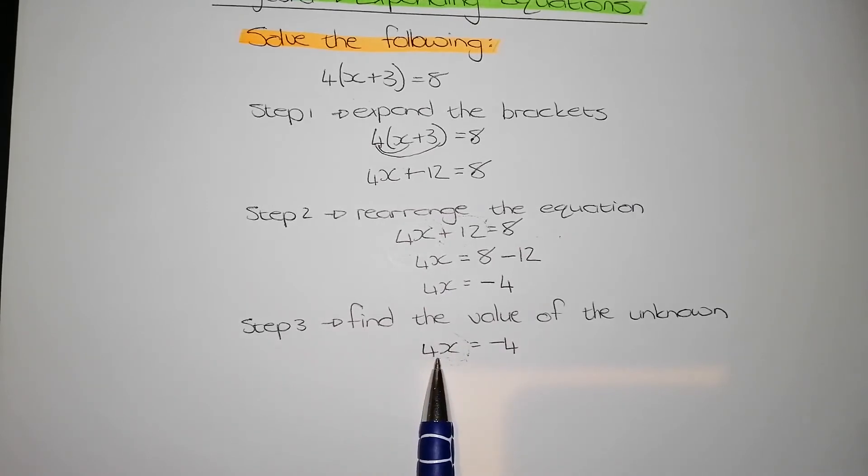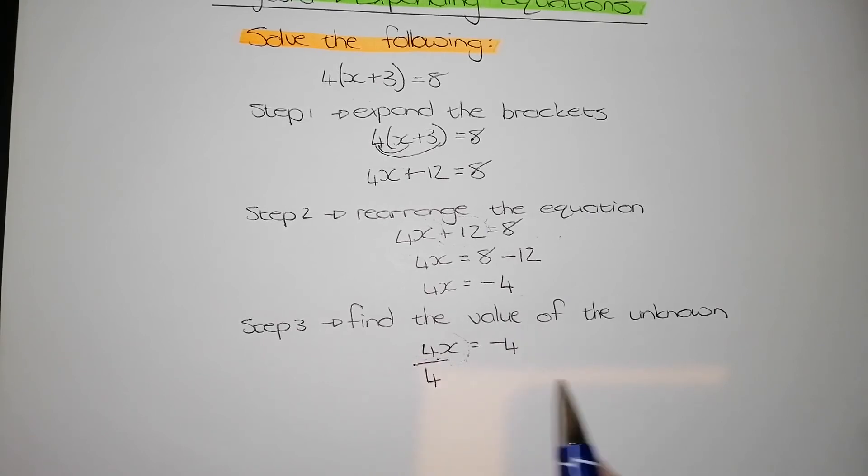To get rid of that 4, I need to do the opposite of what is happening at this stage. The 4 is multiplying with the x now. So the opposite of multiplication is division. So I need to divide by 4 on the left-hand side to get rid of that 4. What I do on the left of my equal sign, I have to do on the right of my equal sign as well. So I need to divide by 4 on the right-hand side.